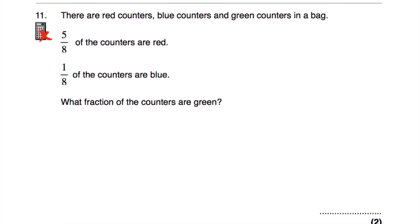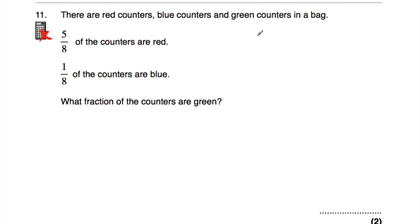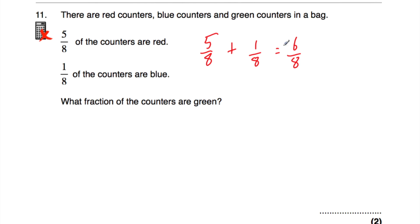Let's look at question number eleven. Question eleven says: there are red, blue, and green counters in a bag. Five eighths of the counters are red and one eighth of the counters are blue — what fraction of the counters are green? If we add those two fractions together, that tells us what fraction are red or blue. Five eighths plus one eighth equals six eighths, because five plus one is six. So six eighths of the counters are red or blue.